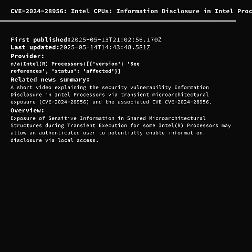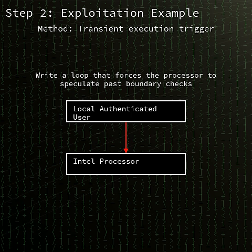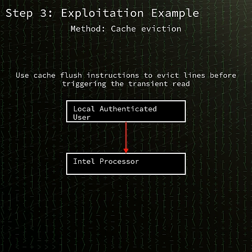Today's topic is CVE 2024-28956, a new information disclosure weakness in certain Intel central processing units. At its core, the flaw arises from shared internal buffers and prediction units inside the chip that can momentarily expose data during speculative or transient execution paths.